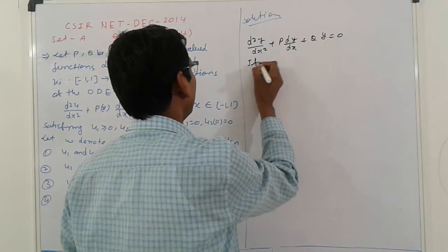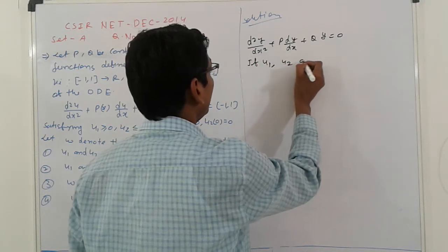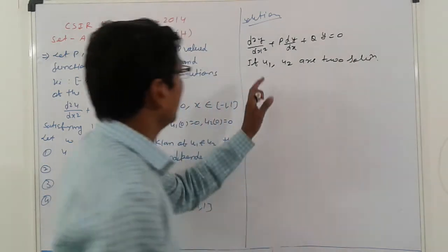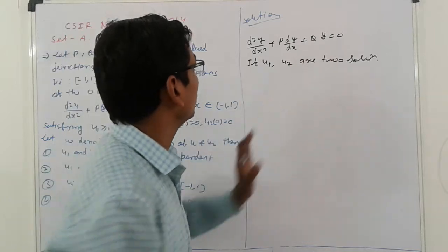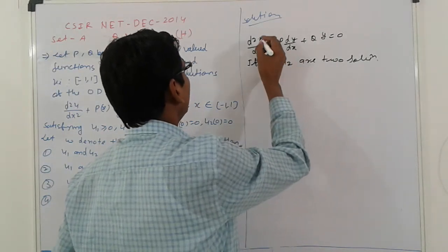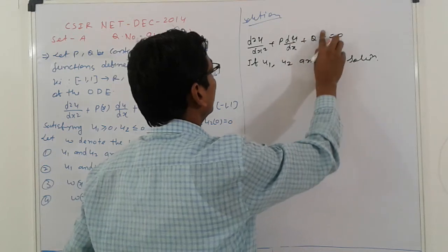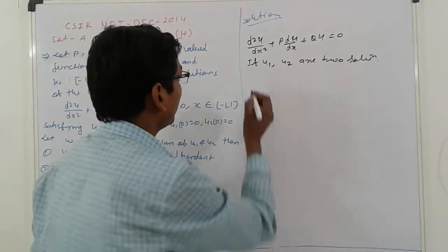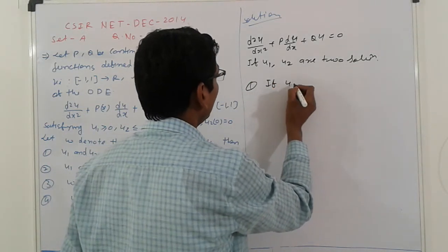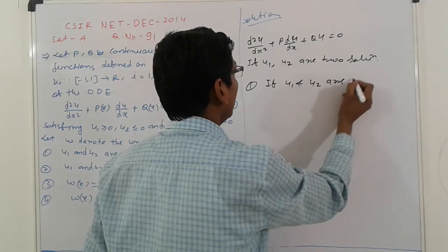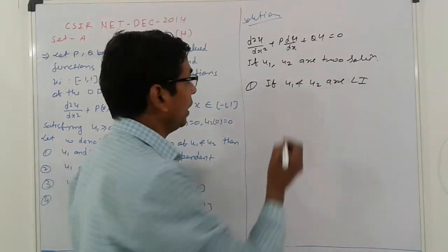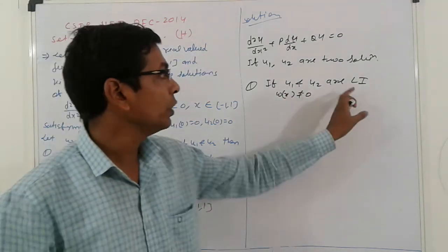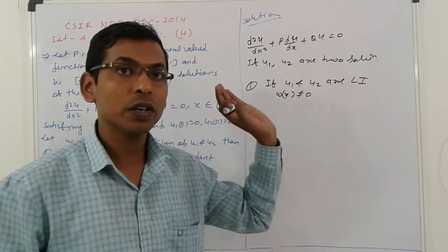Suppose if U1 and U2 are two solutions. So here first in answer if the U1 and U2 are linearly independent, so that case would be Raskian not equal to 0. So U1 and U2 linearly independent, so Raskian is not equal to 0.